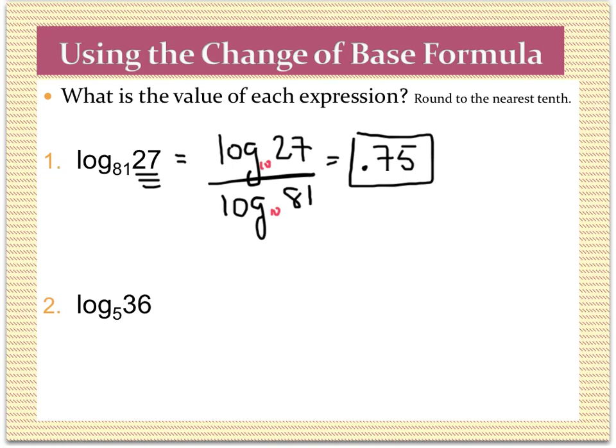Remember, you want to put that whole expression in your calculator and then press enter. You don't want to round intermediate values — don't do log of 27, write it down, then log of 81, write it down, and type those numbers back in. You want to do it all in one step so you round only at the end.